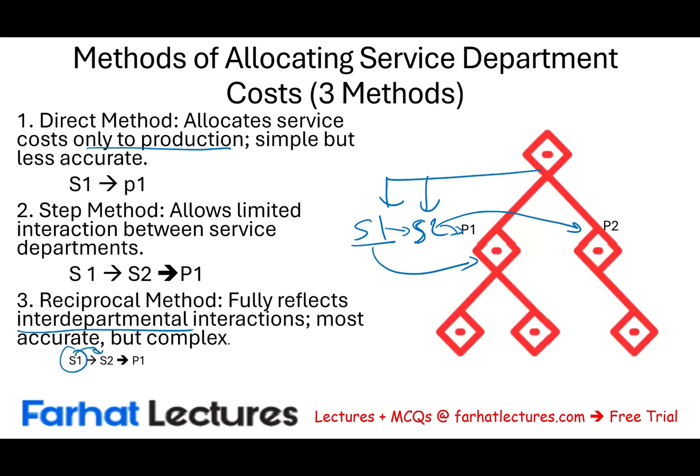In the reciprocal method, Service 1 is allocated to Service 2 and then to Production 1, but also Service 2 services Service 1, and then Service 1 services Production 1 — reflecting the two-way relationship. The best way to learn these three methods is to work examples for each: the direct method, the step method, and the reciprocal method. Go to Farhat Lectures for additional resources — multiple choice questions and exercises — whether you are studying for your CMA, CPA, accounting, or finance course. Invest in yourself and study hard.